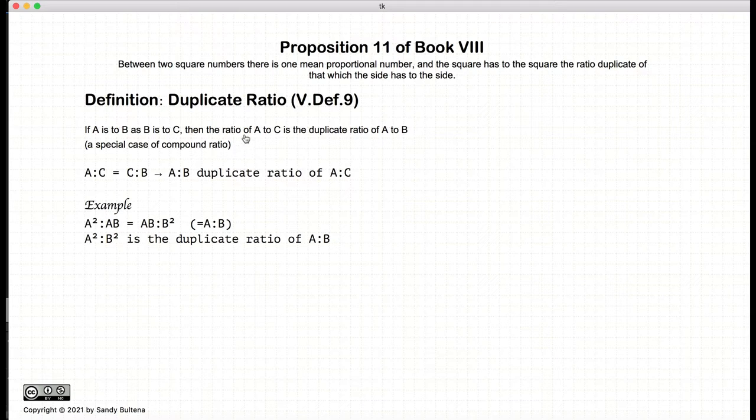Another definition that we need to look at is the definition of a duplicate ratio, and this was definition 9 of Book 5. If we have a series of proportions where a is to c is equal to c is to b, then a to b is defined as the duplicate ratio of a to c.